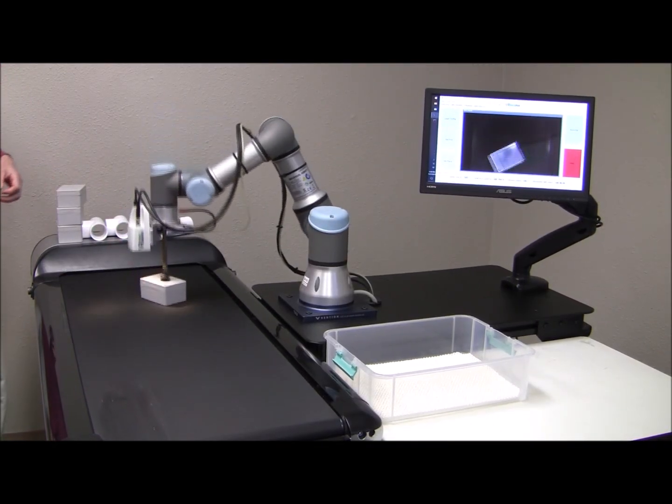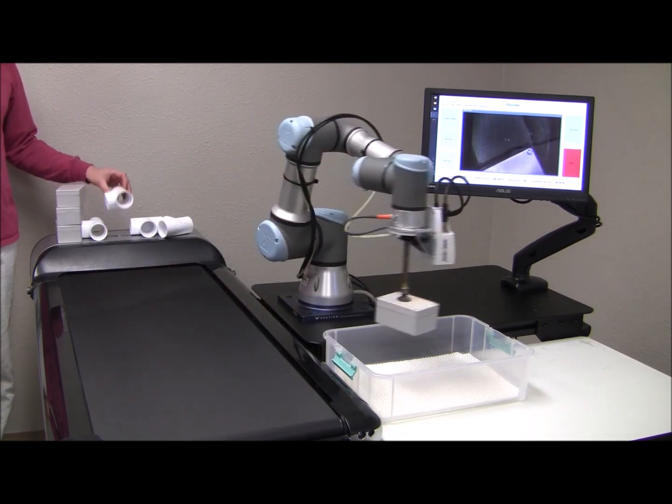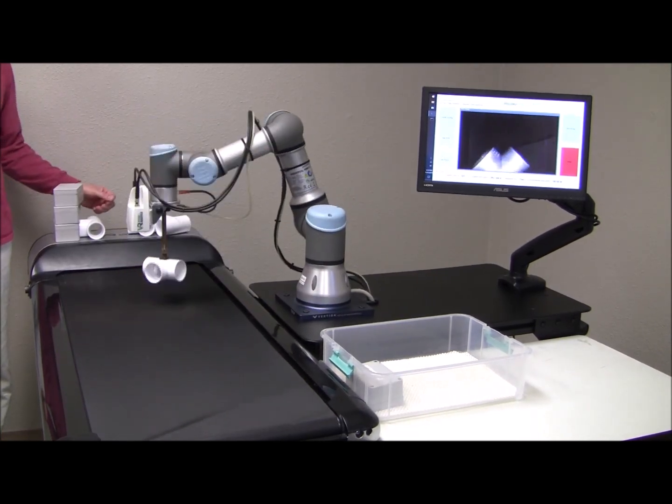Let's look at some more pick-and-place examples. Here you see the system picking boxes, or pipe tees, off the conveyor.